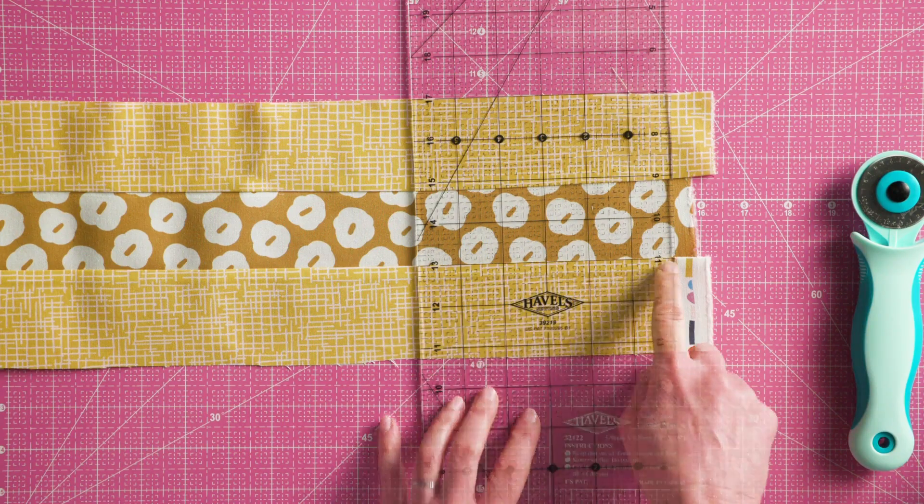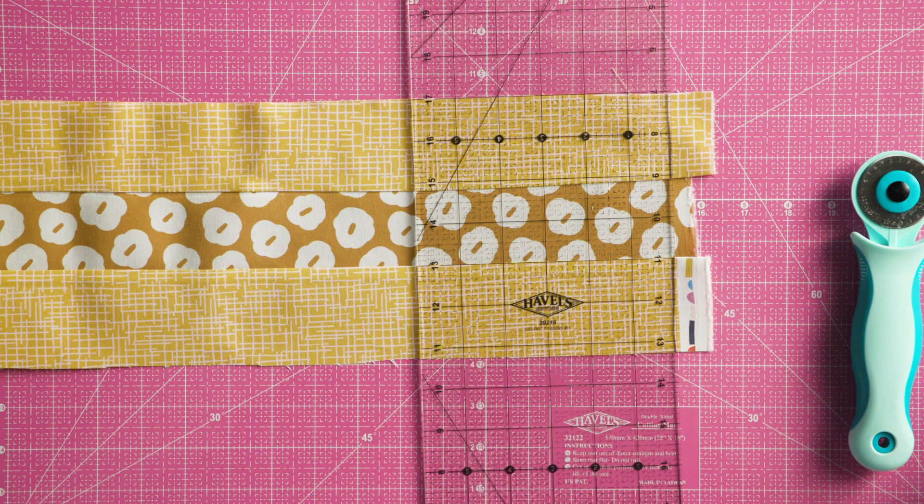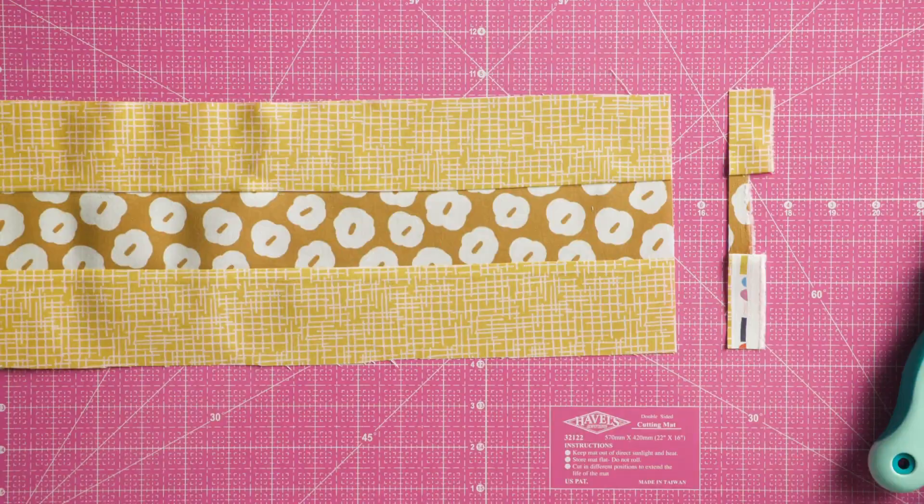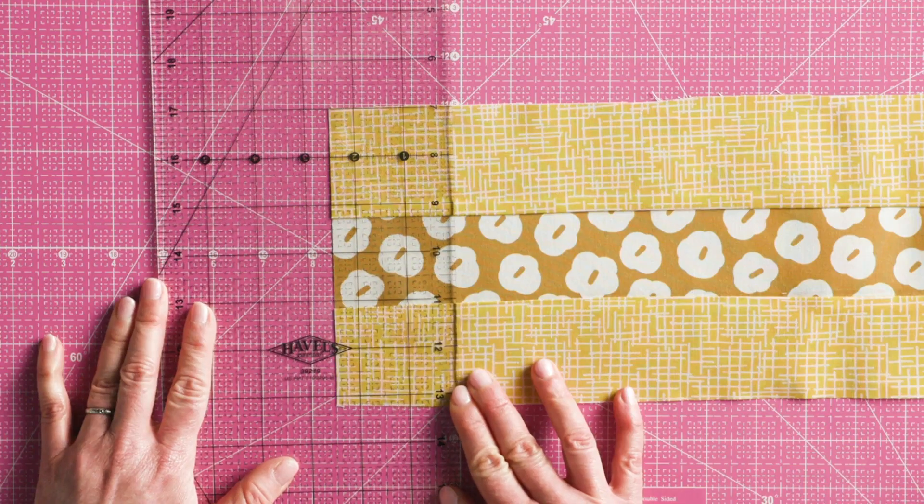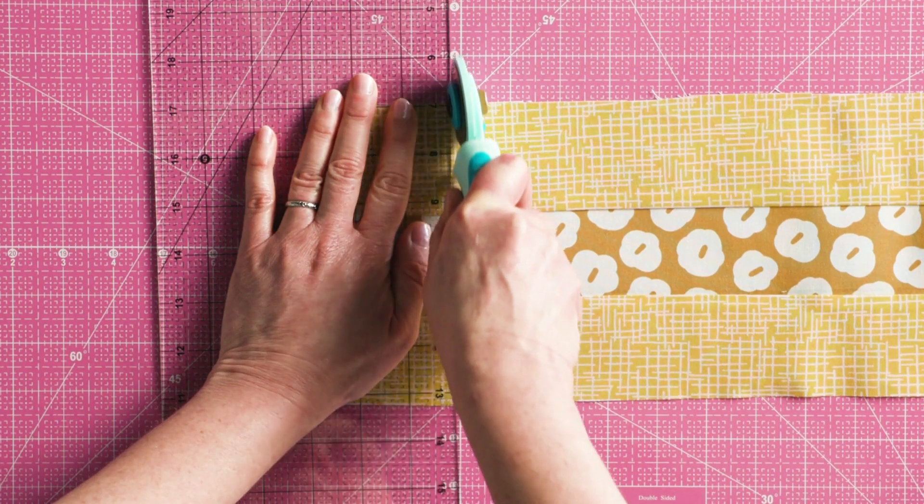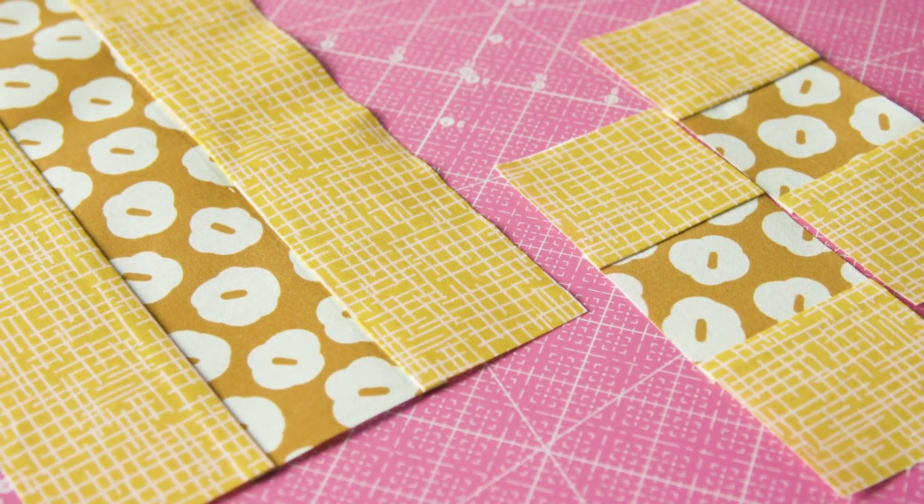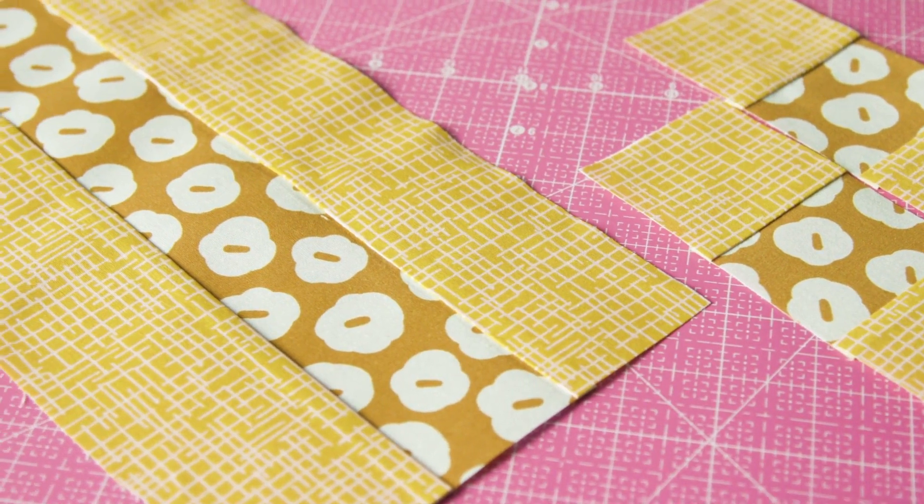Aligning the horizontal lines on the ruler with the long edge and seam lines, trim the uneven ends of the strip set. Keeping the horizontal lines on the ruler aligned with the seam lines, cut the required segments. Strip sets allow you to cut many patches quickly and efficiently.